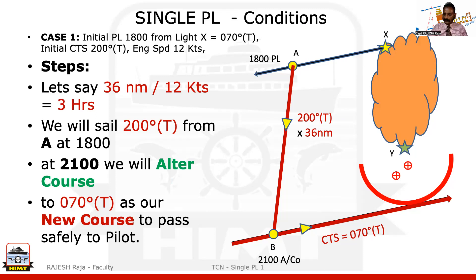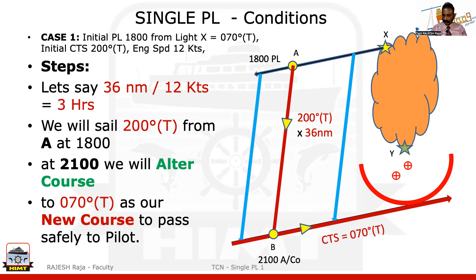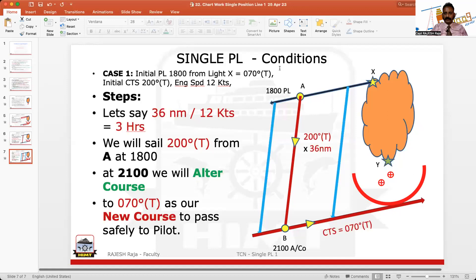As I mentioned, you can choose point A at any place on the first PL which you feel is safe. Whether I take alpha here, or from a different position, I would achieve the same result. There are only two things we are concerned about: what is the time of alteration, and what is the new course. You will get exactly the same answer regardless of where you place alpha on the first PL. This is your first case of the Single PL concept.